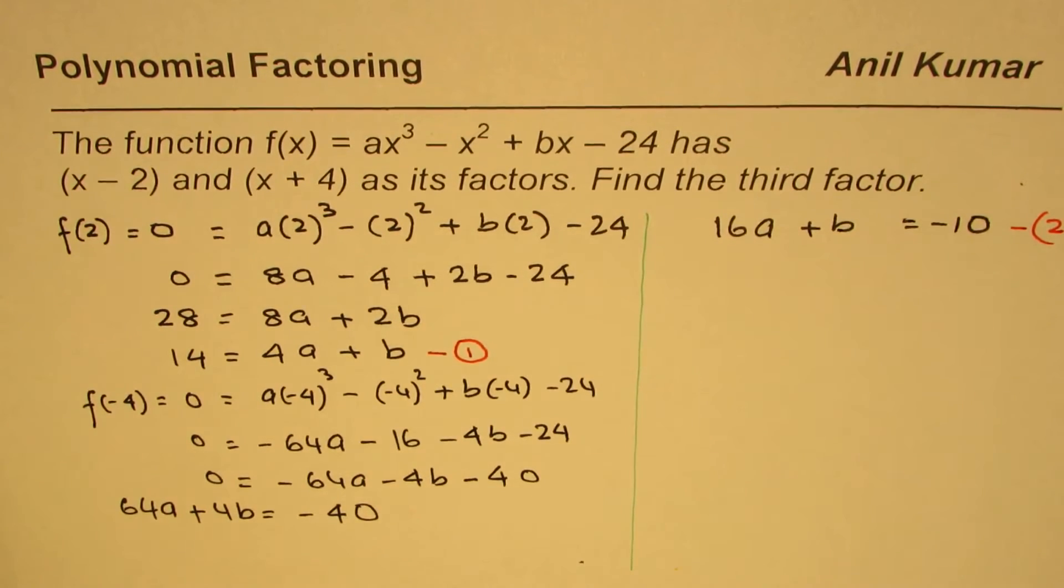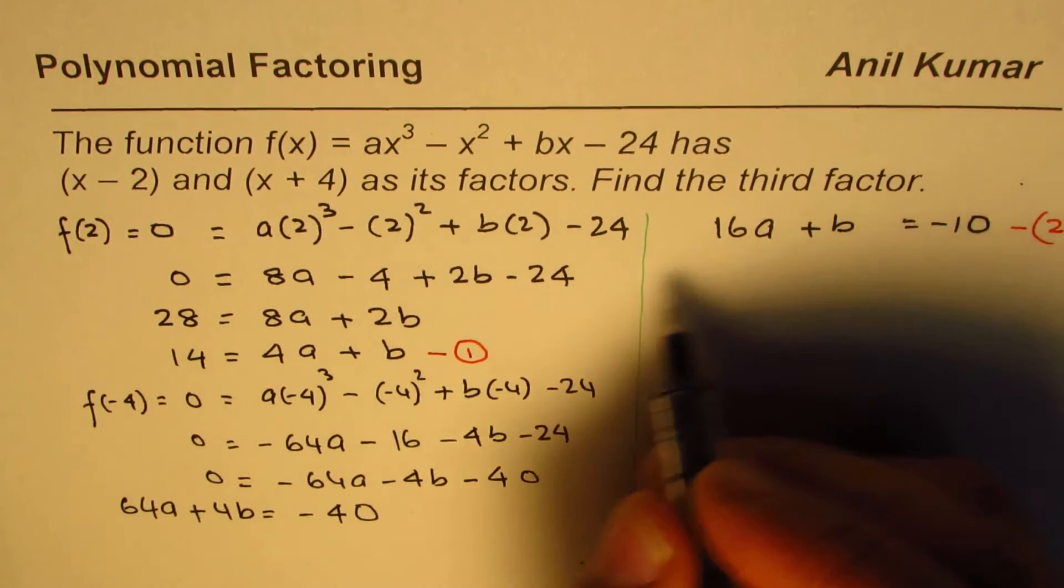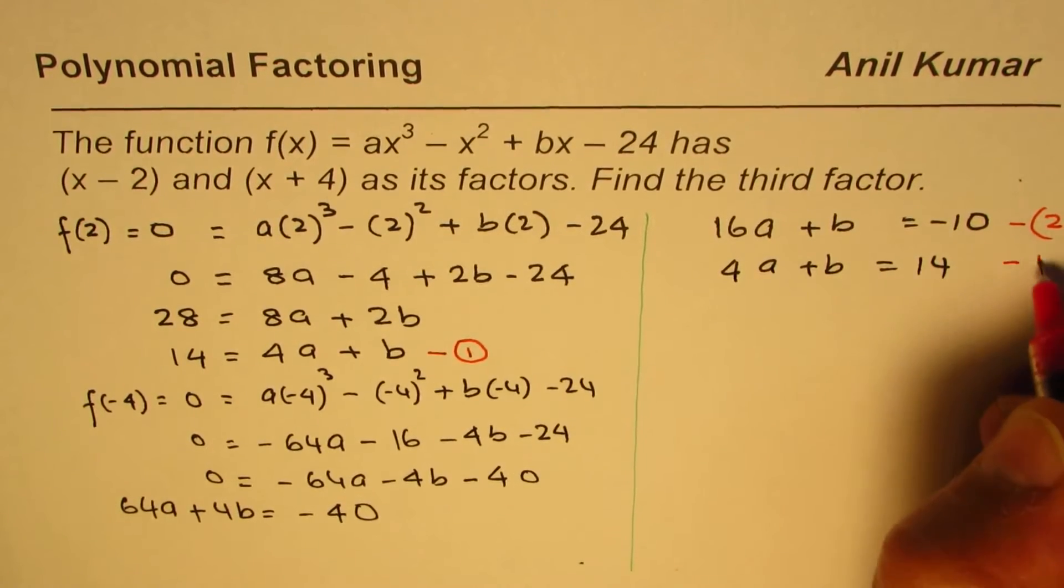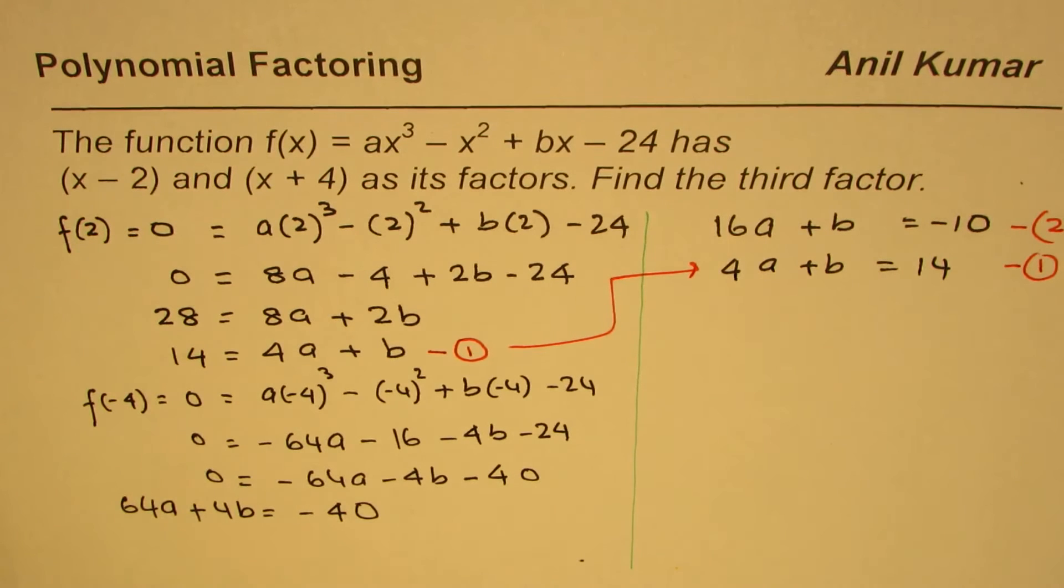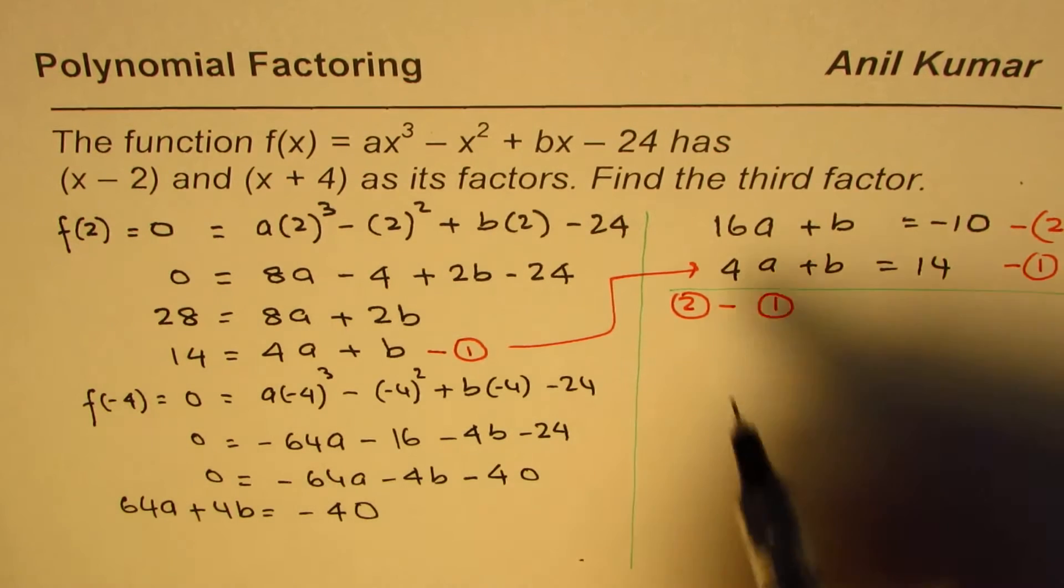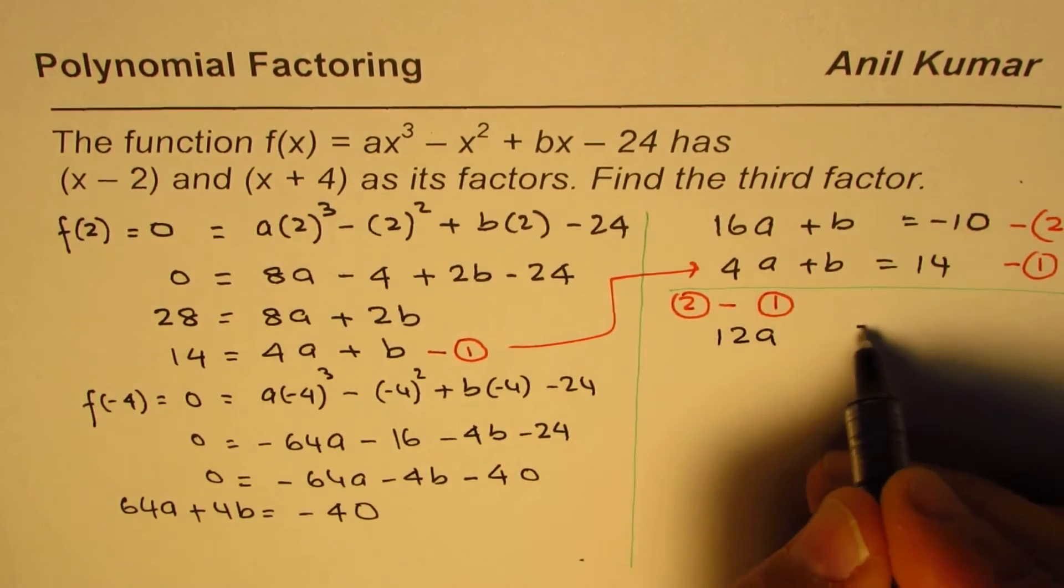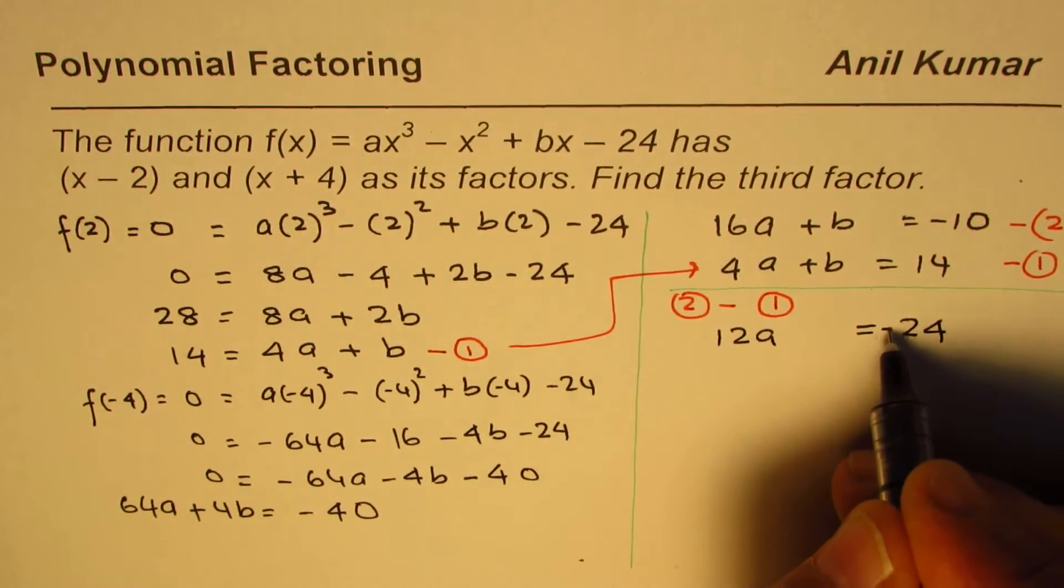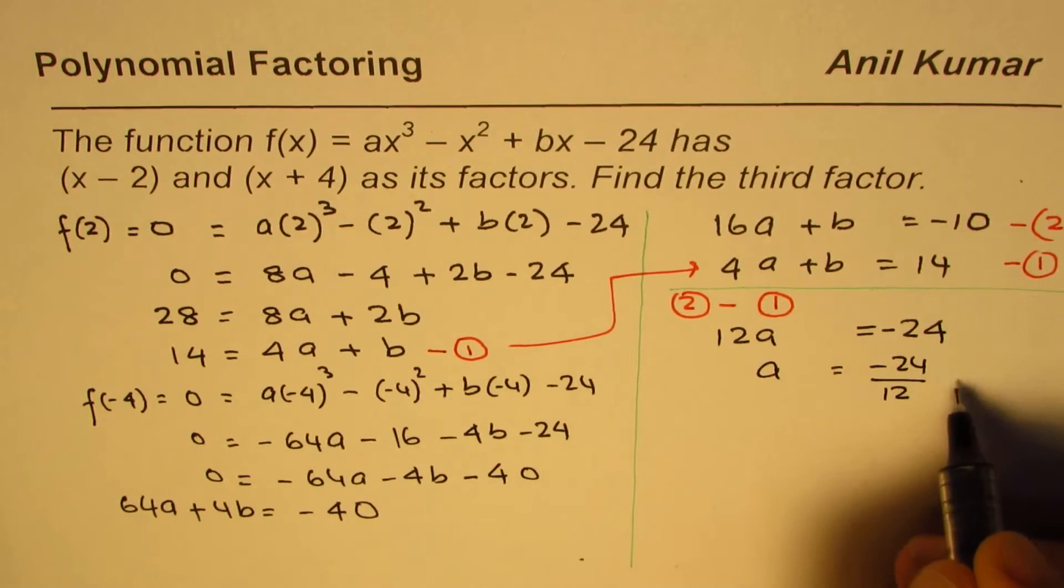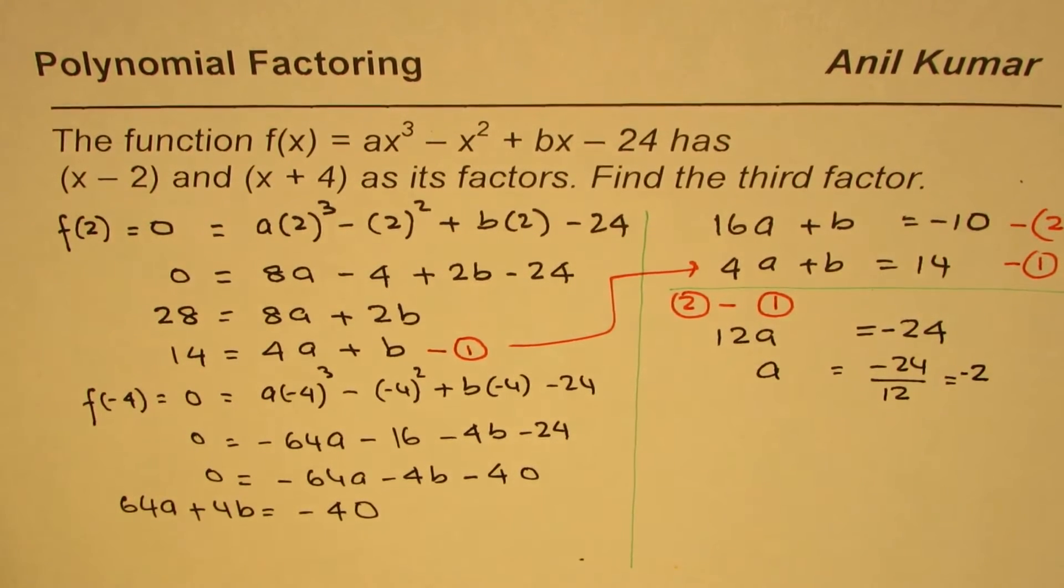These two factors help us to get two equations in a and b. Now we can find these coefficients by elimination method. So 4a plus b equals 14, that is equation 1. We can easily eliminate b by taking equation 2 minus equation 1. That gives us 12a equals minus 24, or a equals minus 24 divided by 12, which equals minus 2.